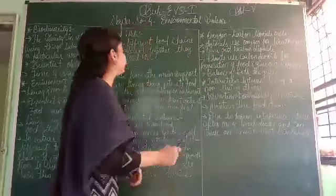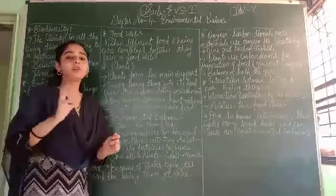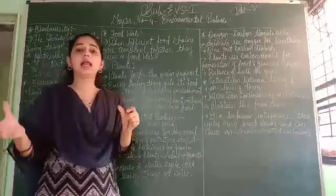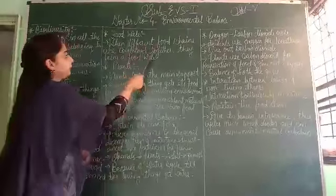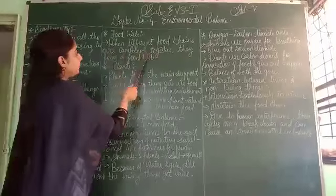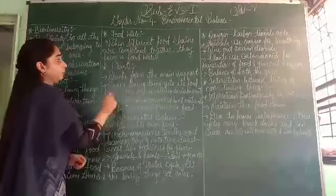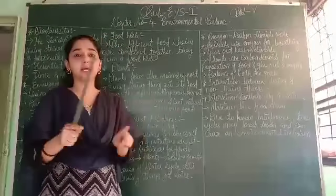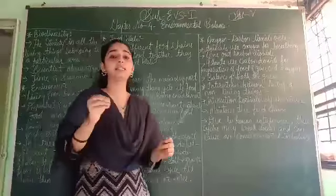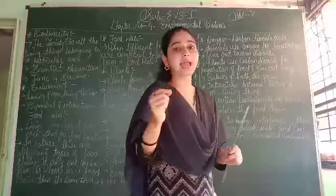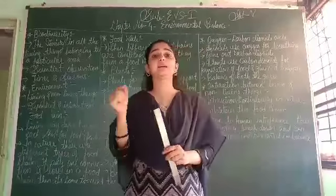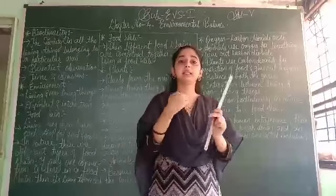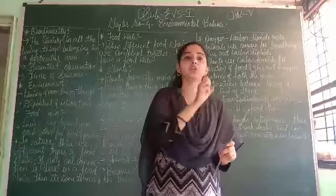Next is food web. Food web means most of the living things depend on each other. When different food chains are combined together, they form a food web. For example, a snake eats a rat and also eats an earthworm. So one animal eats both — this is known as a food web.